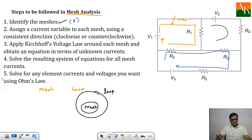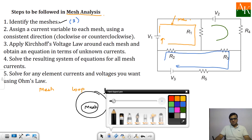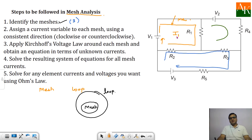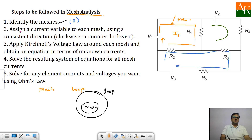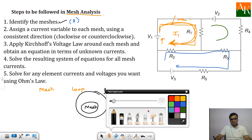You have to assign a current variable in each mesh. There are three meshes, so I have to assume three currents. In the first mesh I am assuming the current as I1, and you have to assign the direction for the currents. We do not assign the direction by looking at the polarity of the sources — we give an arbitrary but consistent direction.